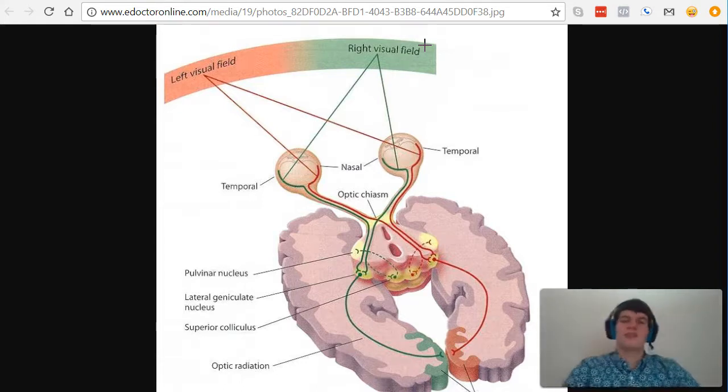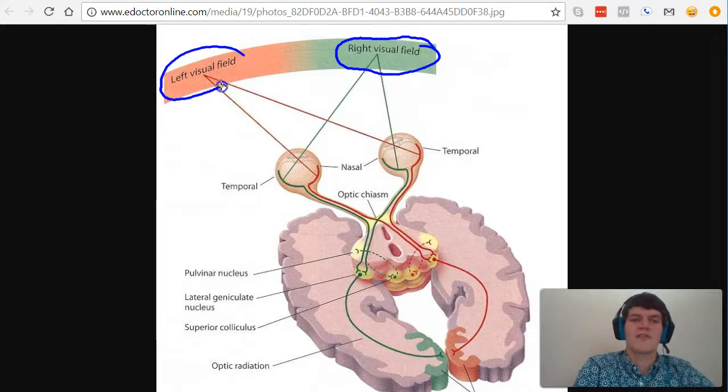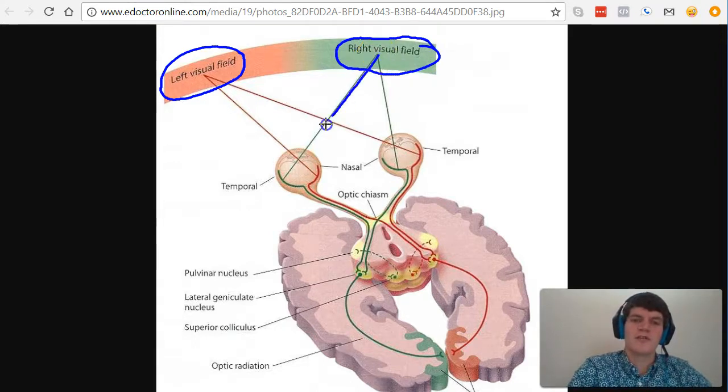In this case, we're dealing with visual information. If you look at this diagram, you'll notice we have a right visual field, which is the visual information on the right side of our body, and our left visual field, which is the visual information on the left side of our body. Notice that information from the right visual field is processed by both eyes.